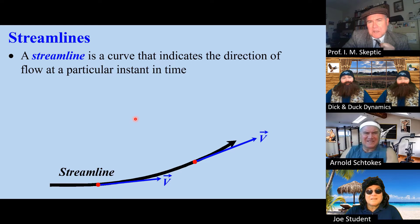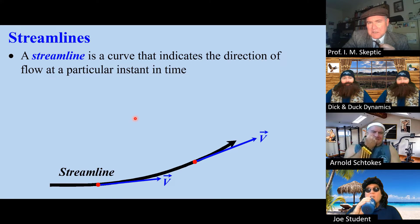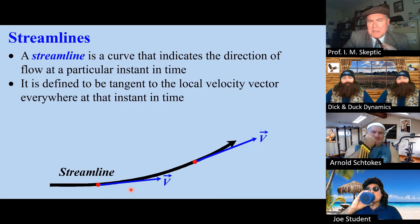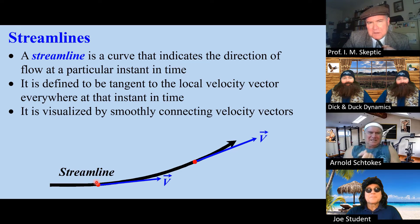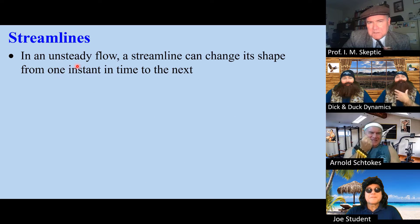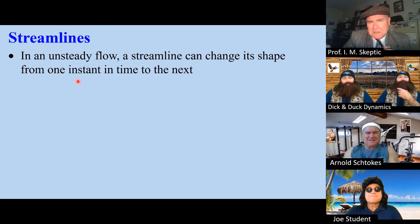A streamline is a curve that indicates the direction of the flow at an instant in time. At that instant in time, it's tangent to the local velocity vector. It is visualized by smoothly connecting the velocity vectors. In an unsteady flow, a streamline can change its shape from one instant in time to the next.